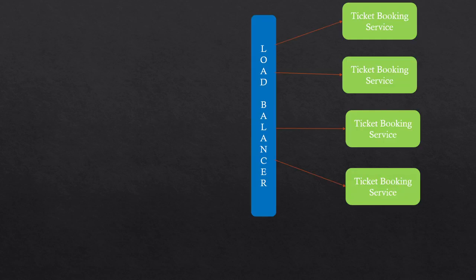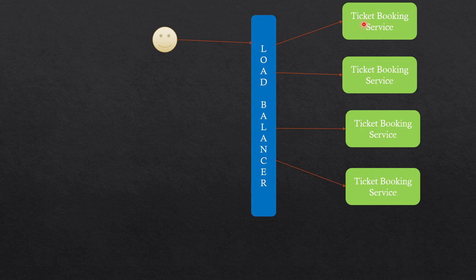We'll start with an example — a ticket booking service, similar to a movie ticket booking service system design I've already done (link in the description and on the card above). This service allows a user to book a seat for a movie and purchase the ticket. A user comes, makes a request to book a seat, gets a successful response, makes the payment, and the seat is booked — they are happy.